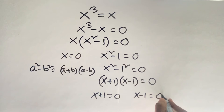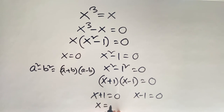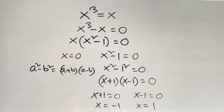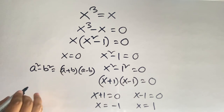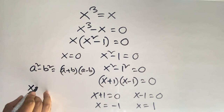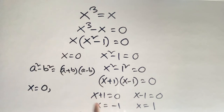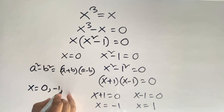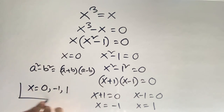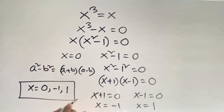So we find x equals minus one, and x equals plus one. Our final answer is x equals zero, minus one, and plus one. Thank you all — if you enjoyed this video please subscribe to my channel. Goodbye!